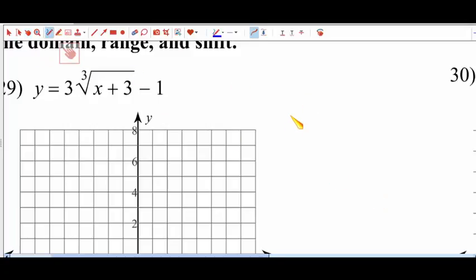All right, this is problem 29. So first thing I'm going to do is graph the parent function. The parent function doesn't have that number or that number. It's just 3 times the cube root of x.